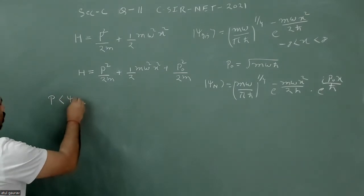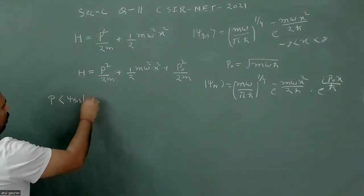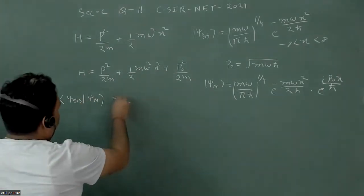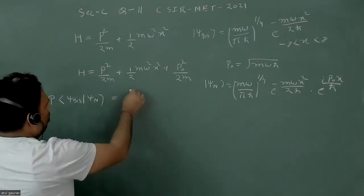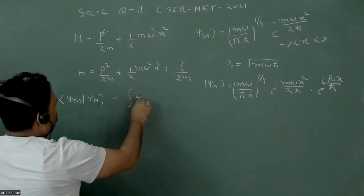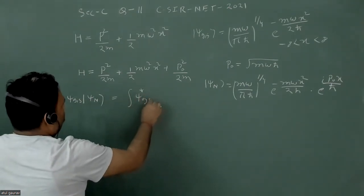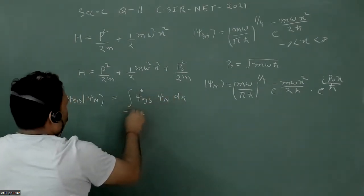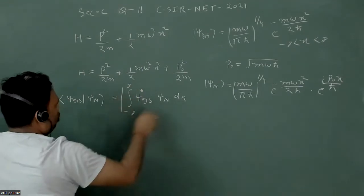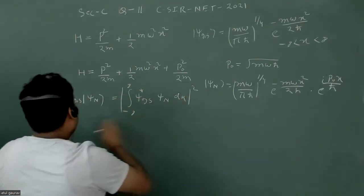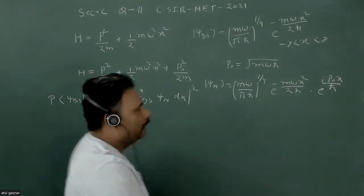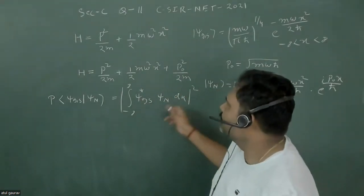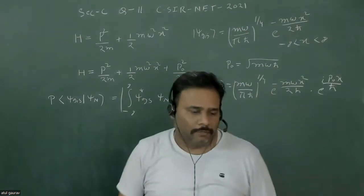The problem asks for the probability that the particle remains in the ground state given the new state. This probability is the mod square of the overlap integral: the integral from minus infinity to plus infinity of psi-star(ground state) times psi-new dx. Both states are normalized, so we just need to evaluate this integral.